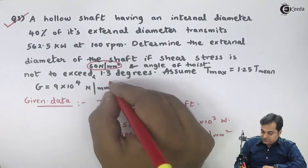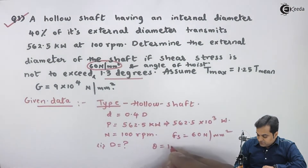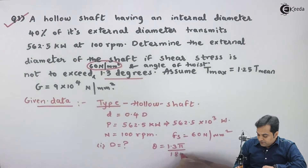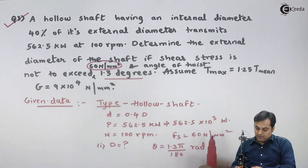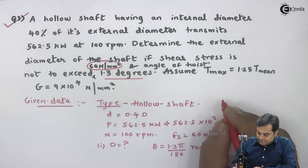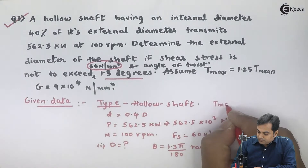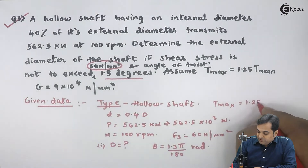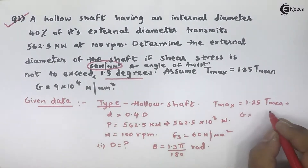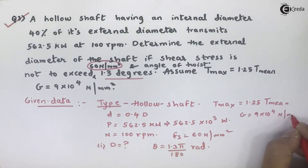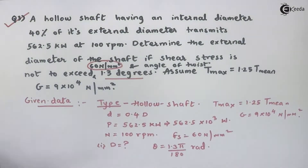The angle of twist theta is 1.3 into pi by 180 radians, because we want our value of theta in terms of radians. T_max is given as 1.25 times T_mean. The modulus of rigidity G is 9 into 10 raise to 4 Newton per mm square. This is the complete data in front of us.